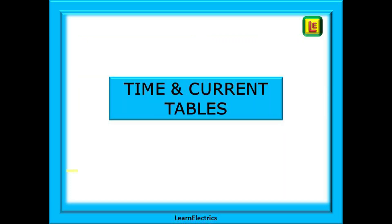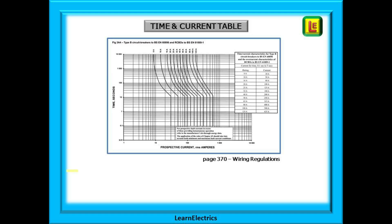How these MCBs are affected by different sized currents is explained in a set of charts, the time and current tables, and each device will have a set of tables that it must conform to. The table we should use in this video will be found on page 370 of the wiring regulations 18th edition.